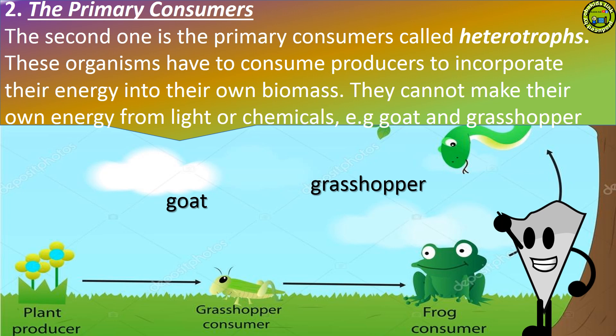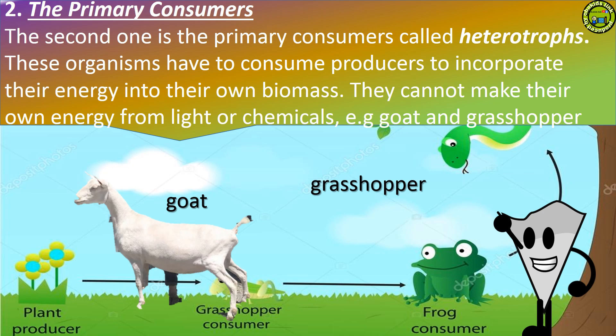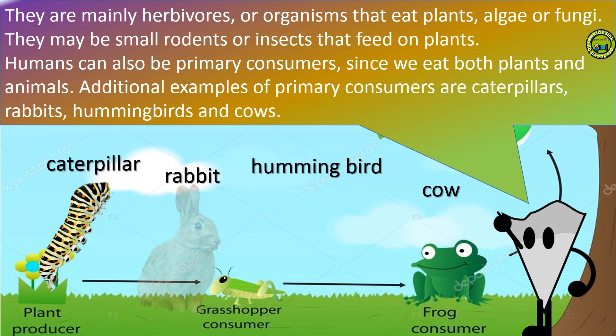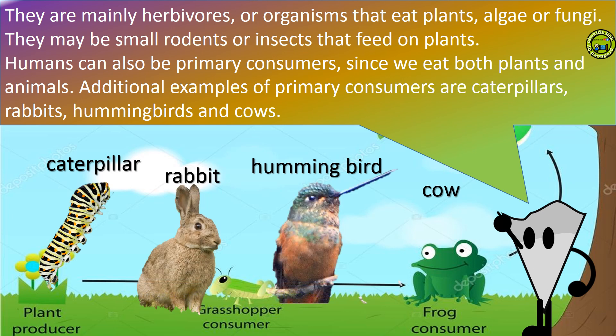The second level is the primary consumers, called heterotrophs. These organisms have to consume producers to incorporate their energy into their own biomass. They cannot make their own energy from light or chemicals, e.g. goat and grasshopper. They are mainly herbivores — organisms that eat plants, algae or fungi. They may be small rodents or insects that feed on plants. Humans can also be primary consumers, since we eat both plants and animals. Additional examples of primary consumers are caterpillars, rabbits, hummingbirds and cows.